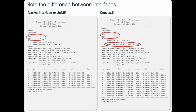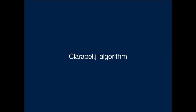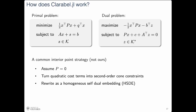I'll now show how a common interior point algorithm is implemented for problems of the type we want to solve, then explain how our method differs. We start with the primal problem — minimize a quadratic function subject to an equality constraint and s living in a mixed convex cone — and write down the dual, which maximizes a similar quadratic function subject to its own dual equality constraint and the dual variable z living in the dual cone of K.